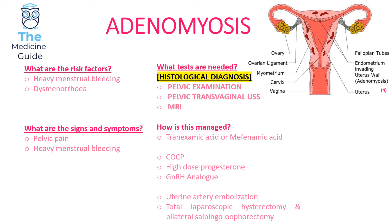In terms of management, we would give tranexamic acid or mefenamic acid initially to alleviate heavy menstrual bleeding. We can give the combined oral contraceptive pill, high dose progesterone, or a gonadotropin-releasing hormone analogue. Other longer-term solutions involve uterine artery embolization and total laparoscopic hysterectomy with bilateral salpingo-oophorectomy.